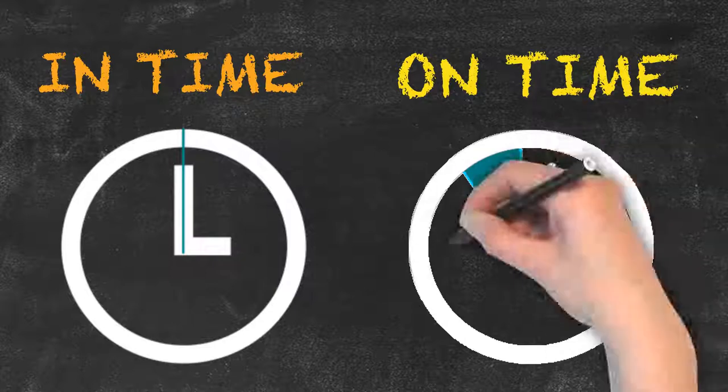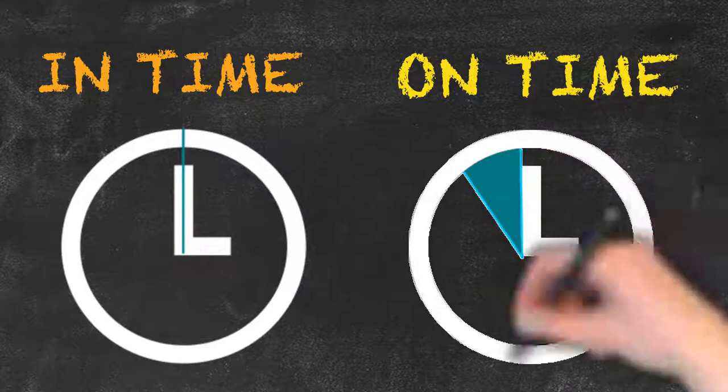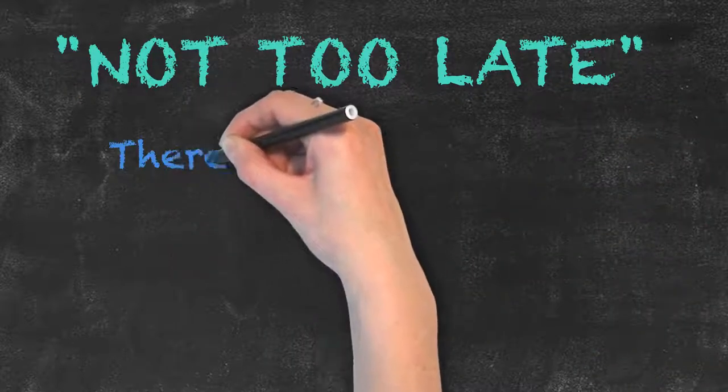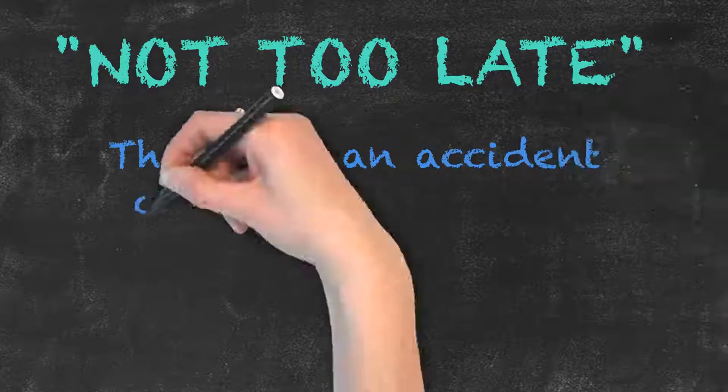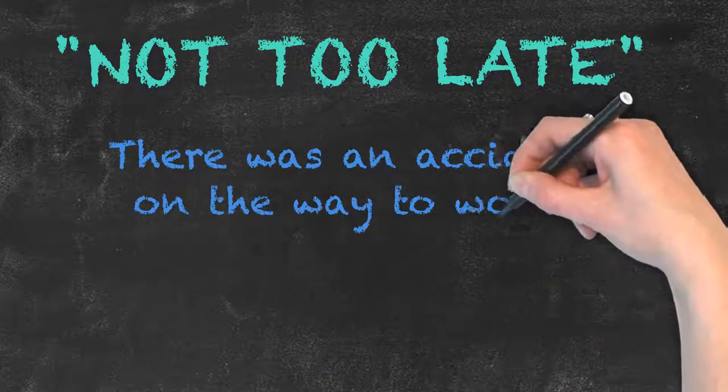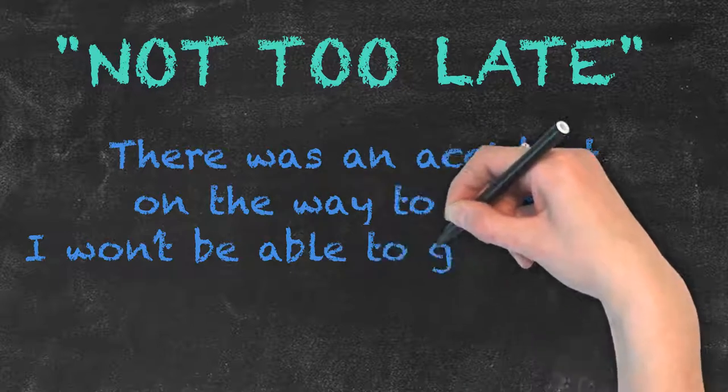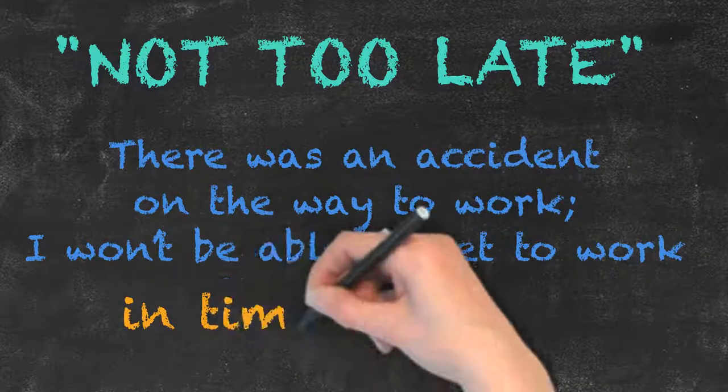There are instances, however, where in time and on time can be used interchangeably. This is particularly the case when the implied meaning is 'not too late.' For example: there was an accident on the way to work, I won't be able to get to work in time.